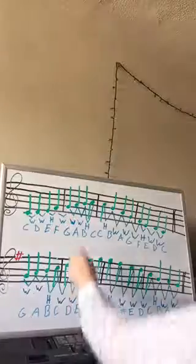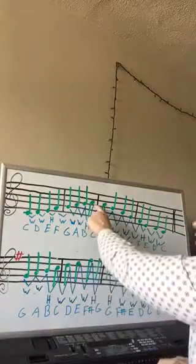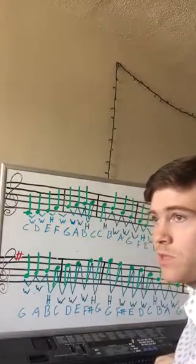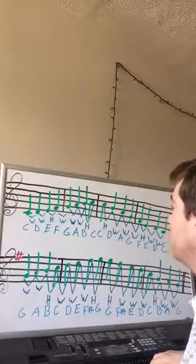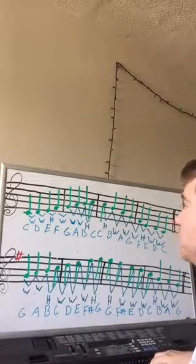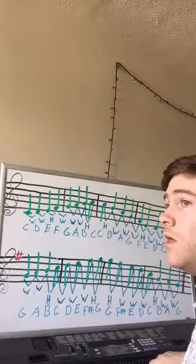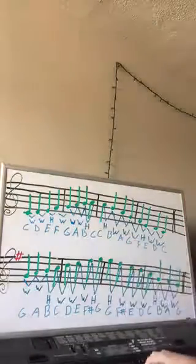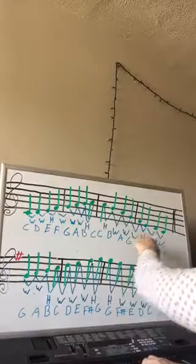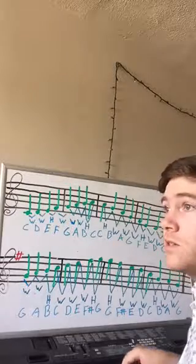G, A — also a whole step. A, B — also a whole step. But then remember, our B to our C is a half step. B, C. And it goes the same way back down, it's just in reverse order. C to B — half step. B, A — whole step. A, G — whole step. G, F — whole step. F, E — half step. E, D. D, C.